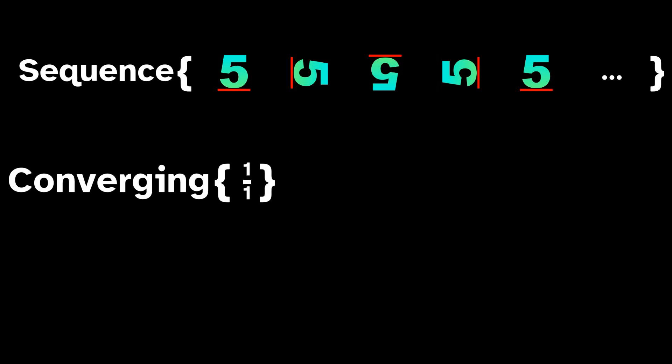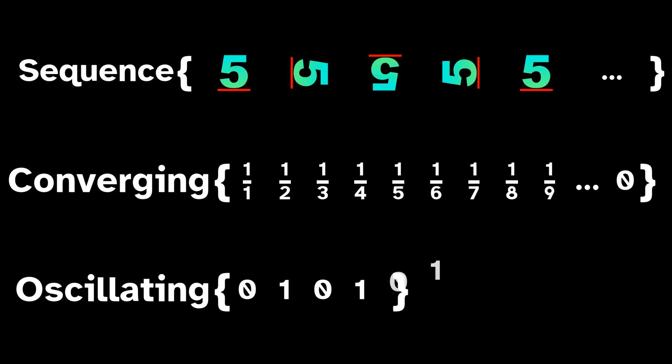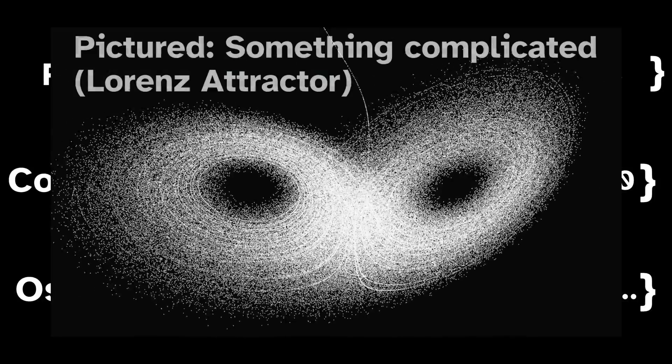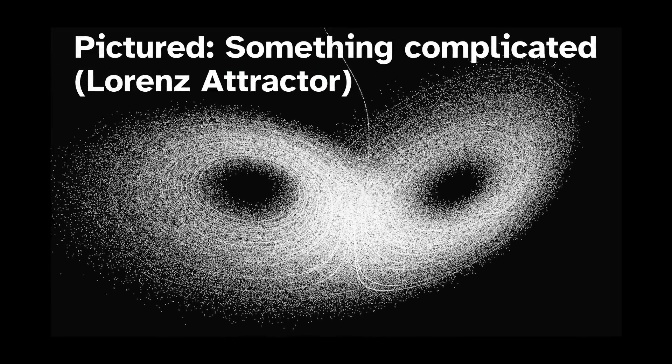Do points eventually converge to some limit? Do they oscillate back and forth between two values, or enter some other periodic cycle? How complicated can these possible trajectories be? Let's look at the baker's map as an example.